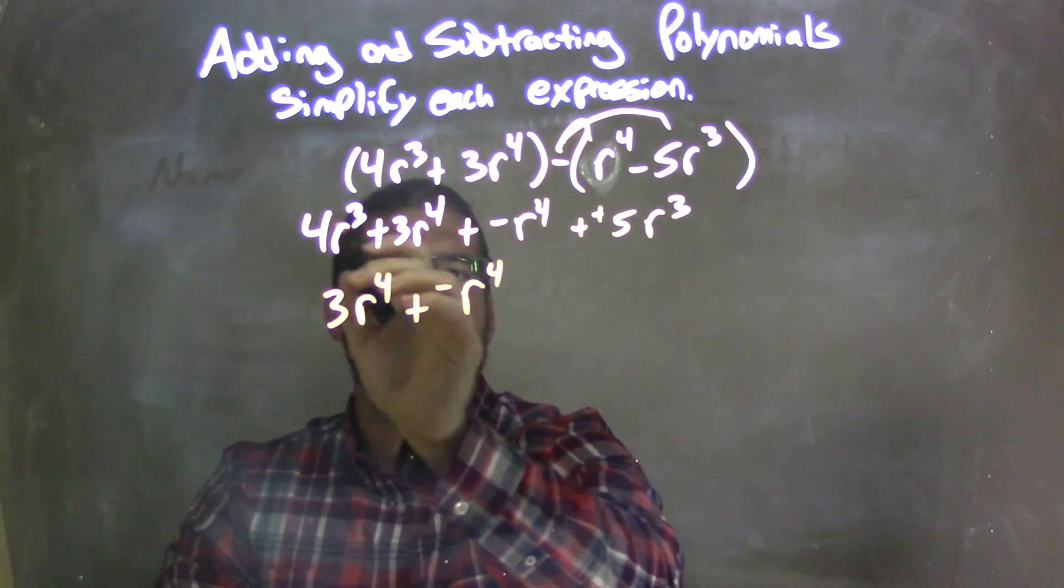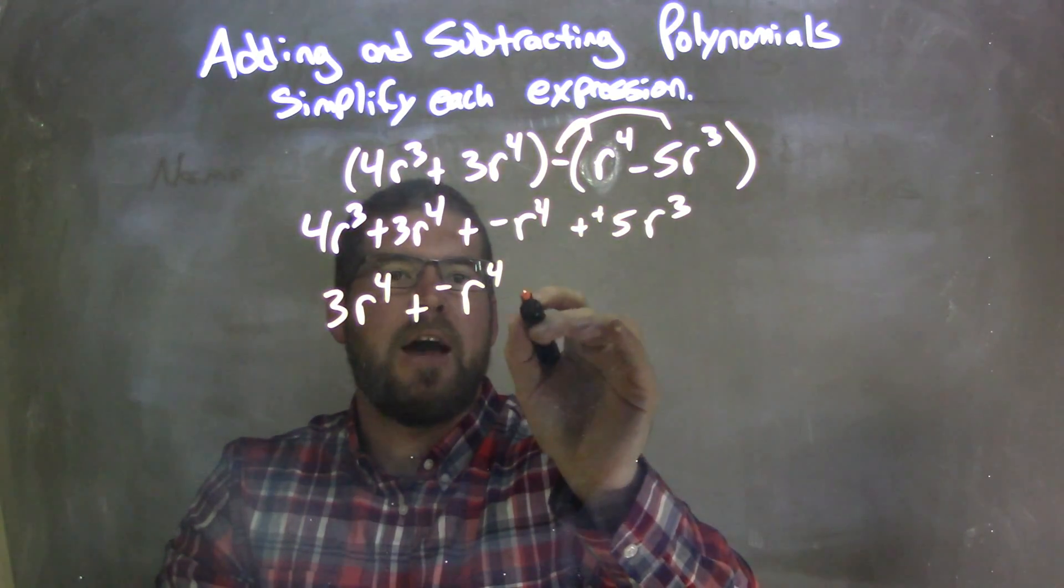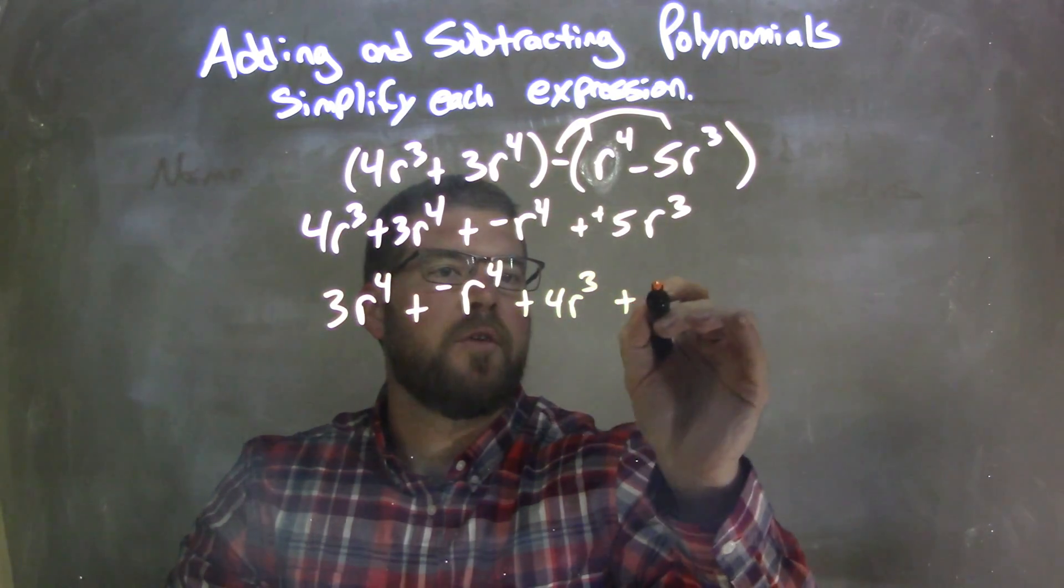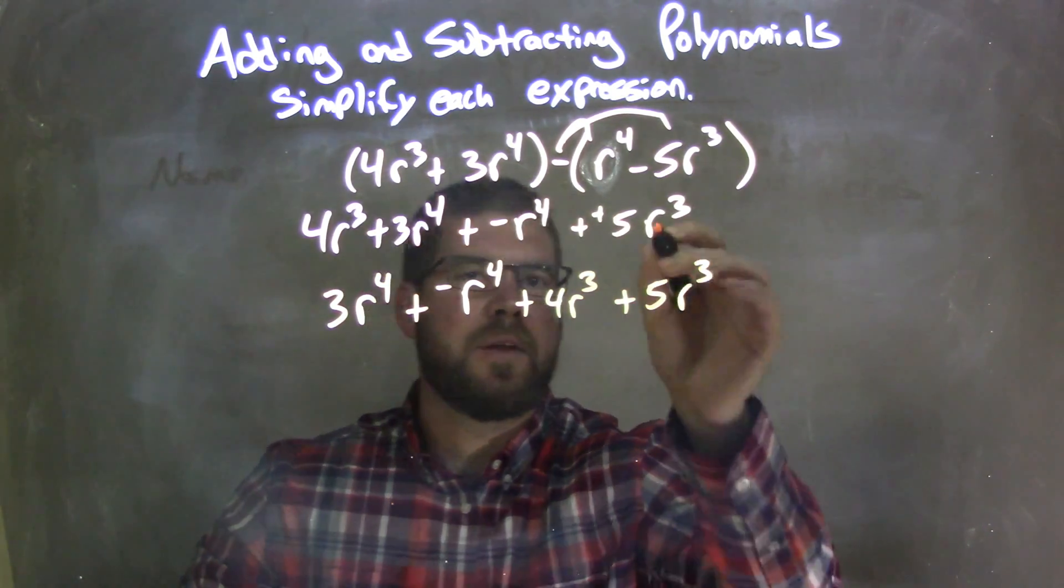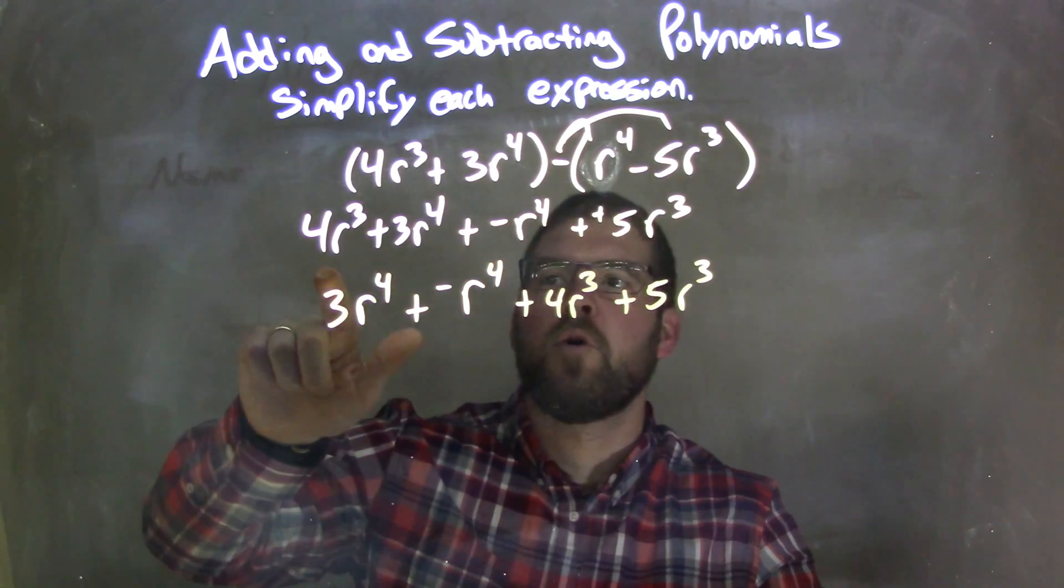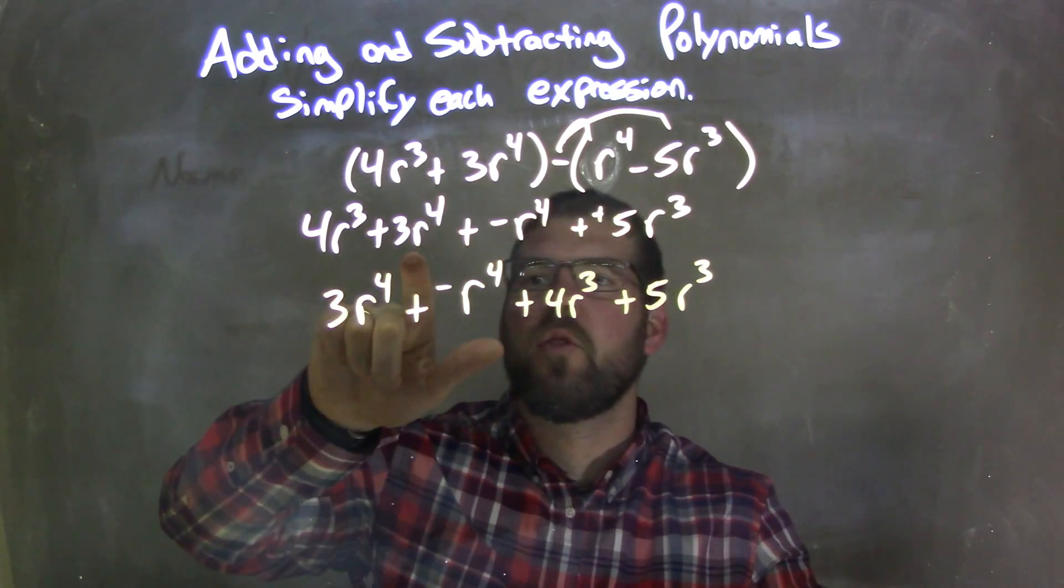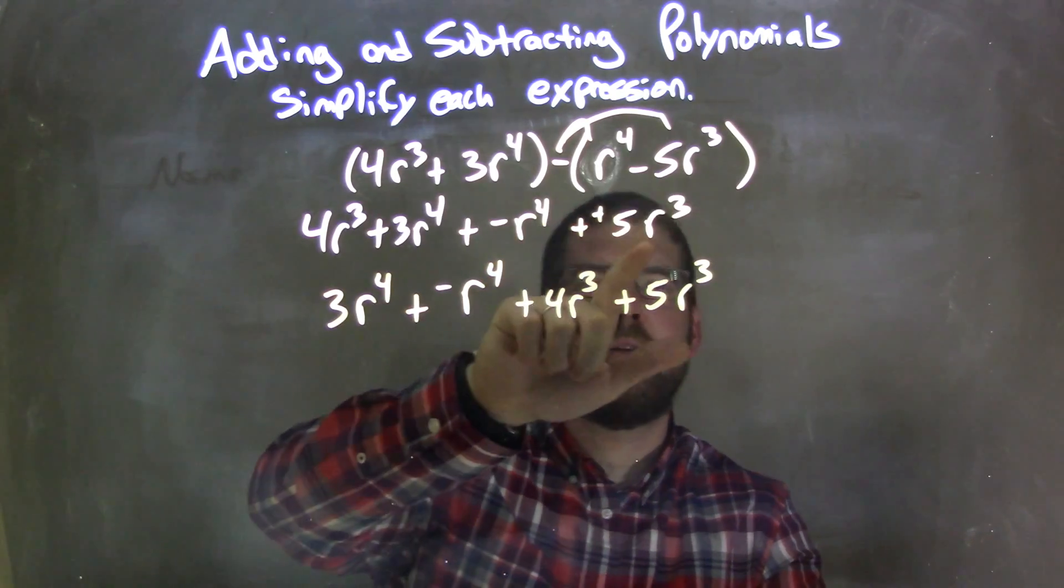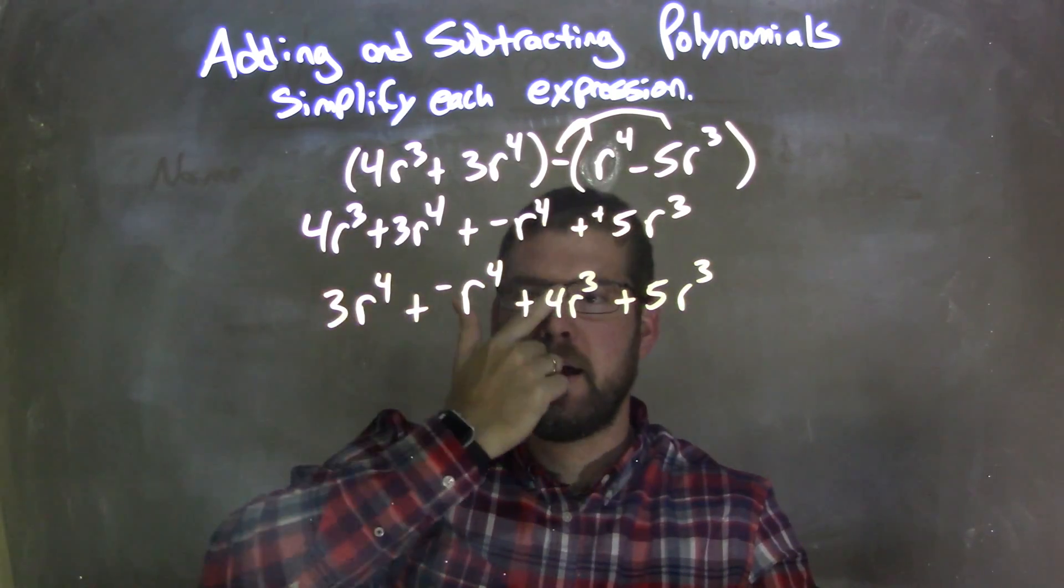All the 4ths are gone, now I'm going to do it with the 3rd powers. So we have plus 4r³ right there, plus 5r³, the last one. Let's double check: 4r³ right there, 3r⁴ right there, negative r⁴ right there, and 5r³ right there. Make sure we got everything down.